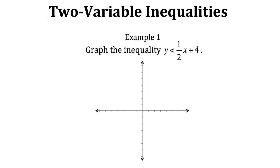Let's get a graph out. Before we start we need to take into consideration what the inequality sign is. For us it's less than, and since it's less than, y will never actually equal this expression because it doesn't have the equal sign there as well. So when we draw our line we need to make it dotted, and that signifies that it cannot equal it.